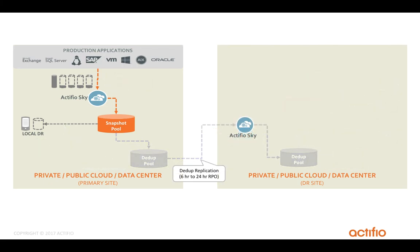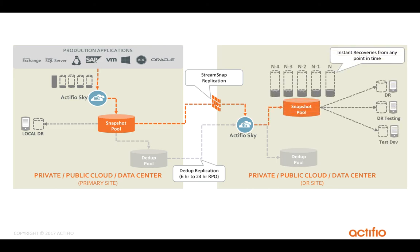The architecture is suitable for 6-hour to 24-hour RPO. Now let's see how Actifio's StreamSnap functionality can bring down the RPO to one hour. With each incremental backup, StreamSnap picks up the change blocks and replicates them over to Actifio at the remote site. Since it is just compressing the change blocks and replicating to the remote site, it replicates data very quickly and brings down the RPO to one hour. It stores multiple recovery points in the remote snapshot pool so that you can do instant recoveries from any point in time.